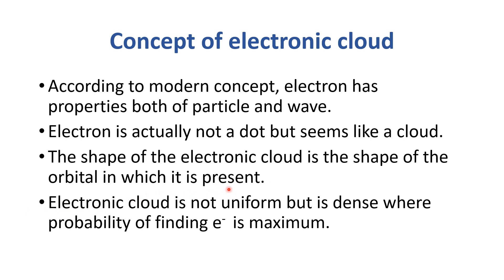The shape of the electronic cloud is the shape of the orbital in which it is present. If the orbital is spherical, the electronic cloud will be spherical. If it's dumbbell-shaped, the cloud will be dumbbell-shaped. If it's complicated, the cloud will be complex. The electronic cloud is not uniform — it is dense where the probability of finding the electron is maximum. An orbital represents 95% probability of finding an electron.